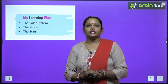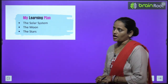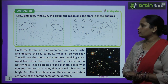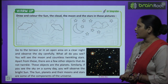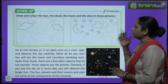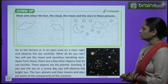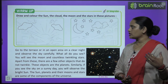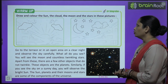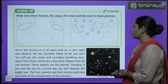We will learn about the solar system, the moon, and the stars. Let's start with the warming up exercise: draw and colour the sun, the cloud, the moon, and the stars in the picture. So you have to draw the sun, clouds, moon, stars, and color them.